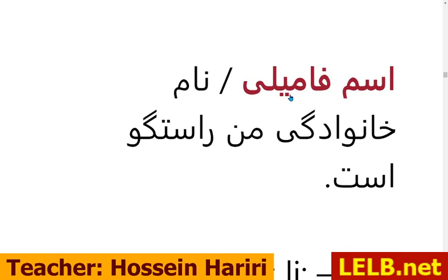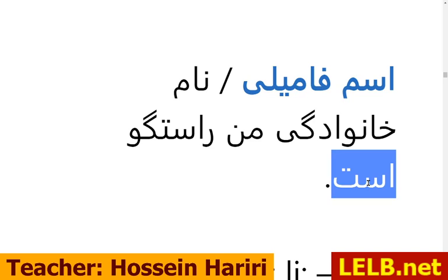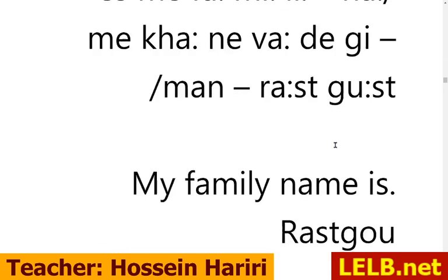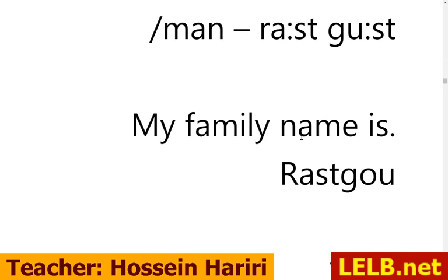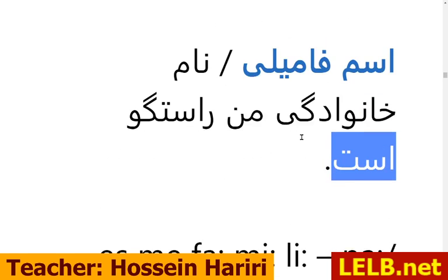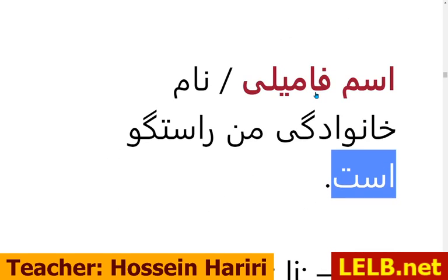اسم فامیلی یا نام خانوادگی من راستگو است, or راستگوست as a contraction. راستگوست is the short form of راستگو است — remember است is the verb meaning 'is.' So my family name is راستگو. اسم فامیلی means family name.